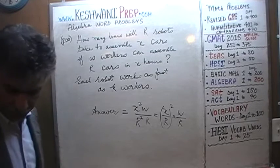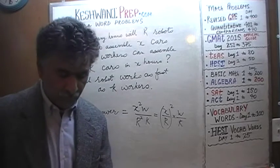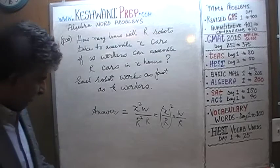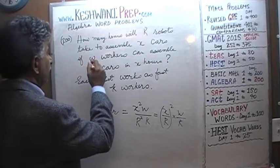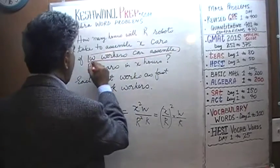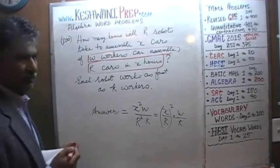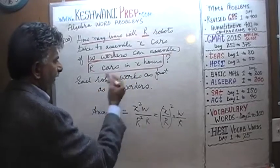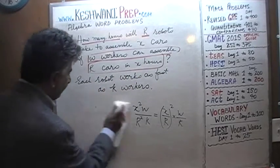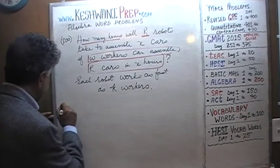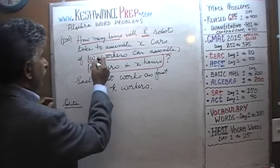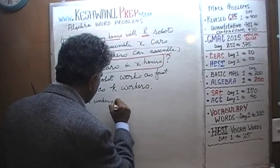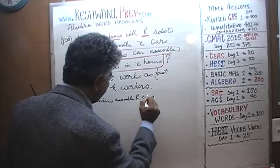So what do we know here? What is our starting point? The starting point is what we are told — what we know and what we are being asked for. What we are being asked for is different from what we are being told. We are told that W workers can assemble R cars in X hours. We are being asked how many hours will it take for R robots to make X cars, given this condition.